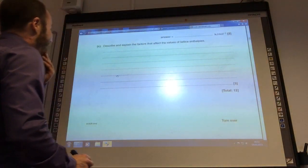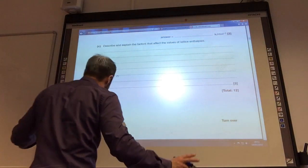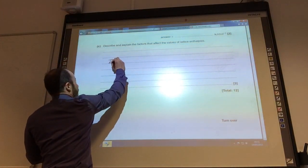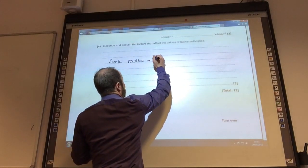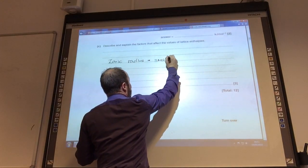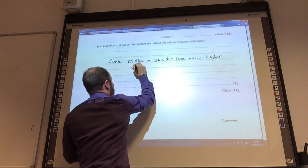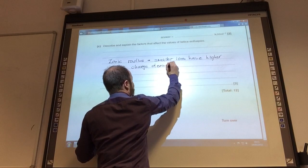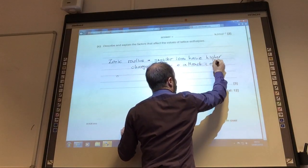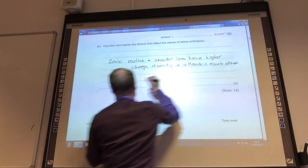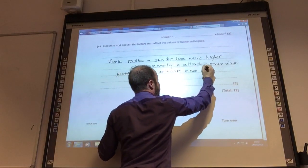We've then got to describe and explain the factors that affect the values of the enthalpy. First thing really important, always talk about ions. Ions are really important. Don't talk about anything else, just ions. So first of all, we can say ionic radius is one factor. Smaller ions have higher charge density, and therefore they attract each other more strongly.